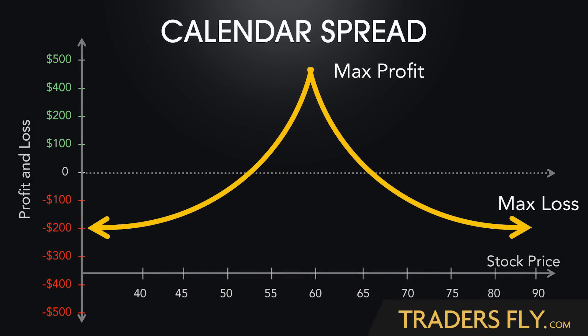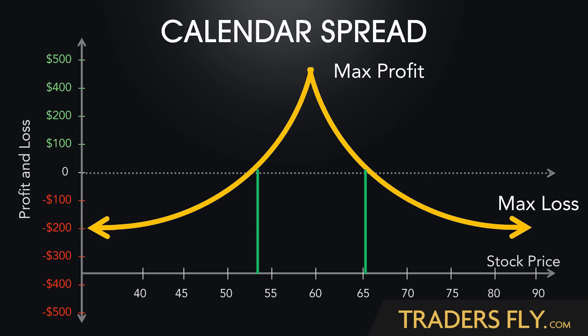Here we have a calendar spread profit picture. If you know what a butterfly looks like, it looks similar to the butterfly. If you buy this calendar spread at the $60 mark, which would be right in the middle, then you would be making a profit if the stock doesn't go anywhere — between about $55 and $65.